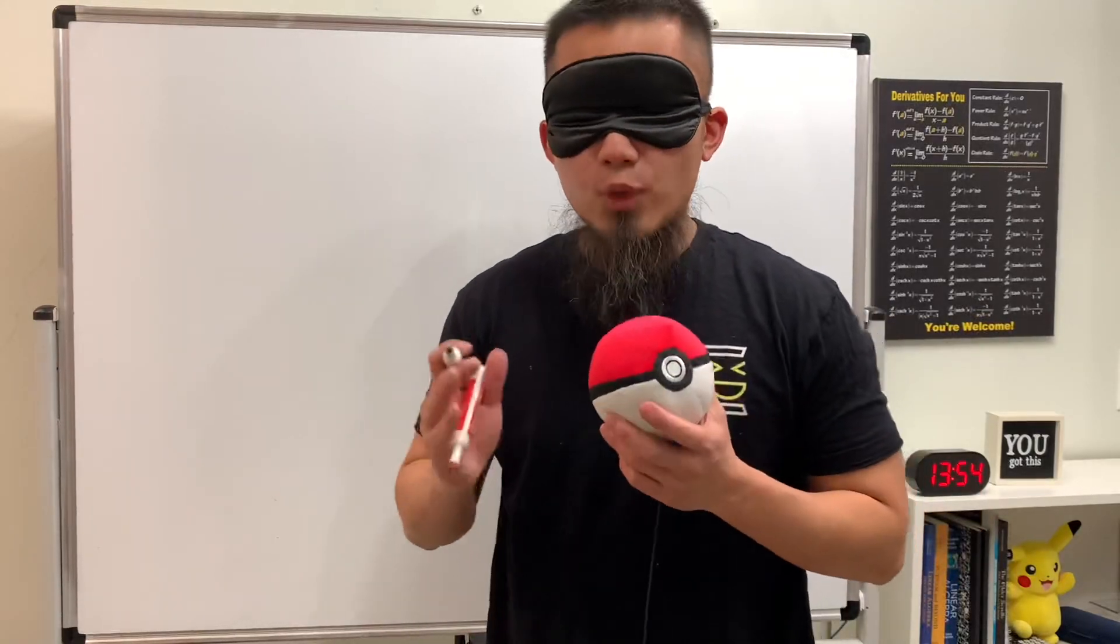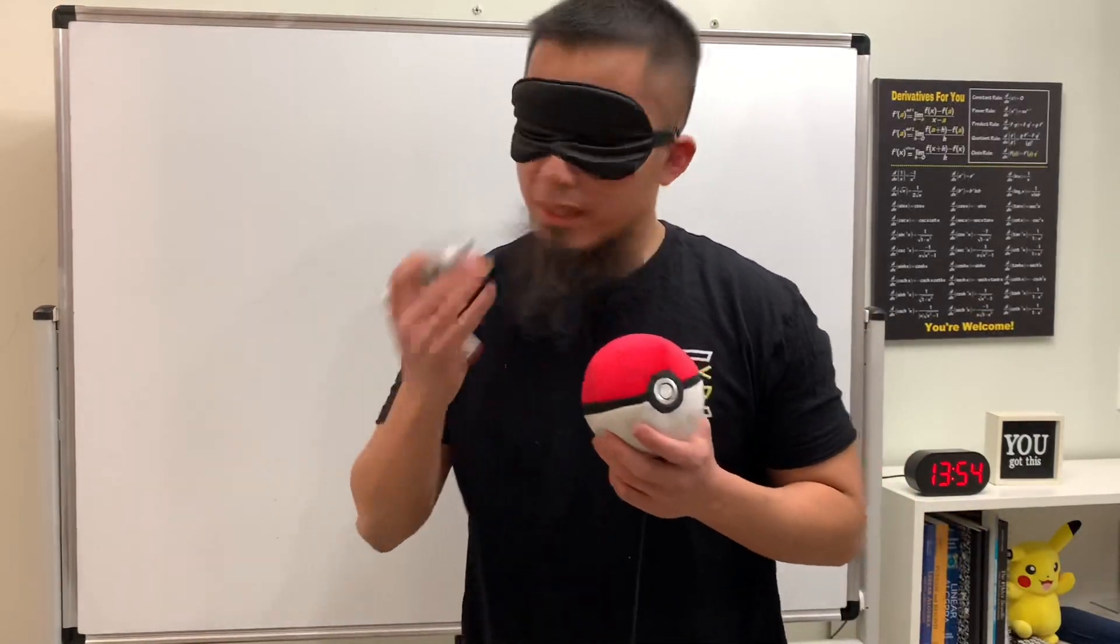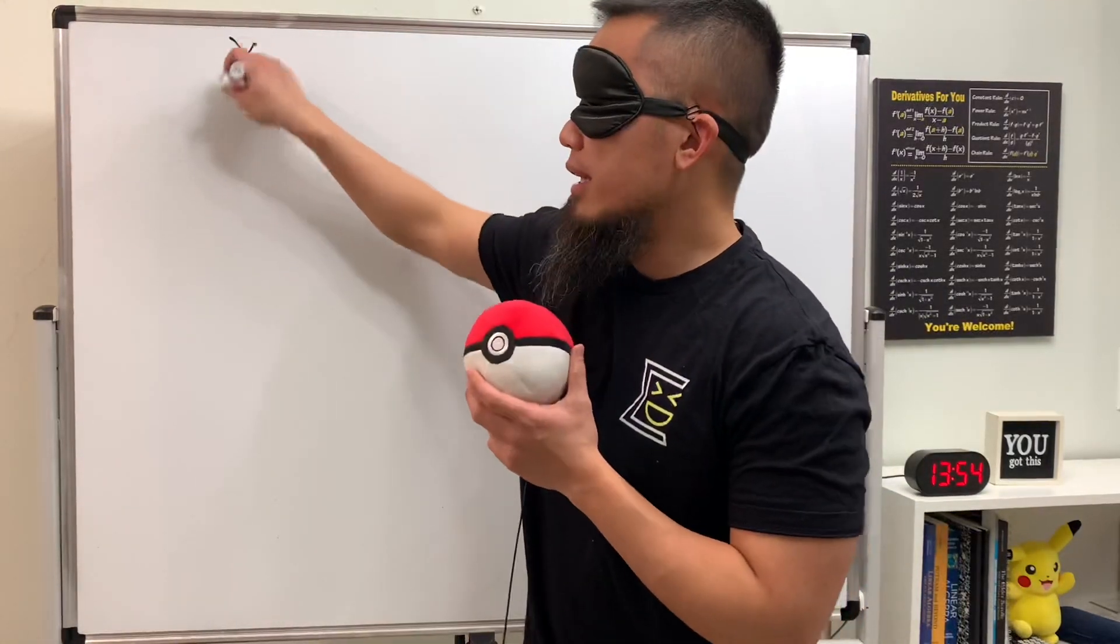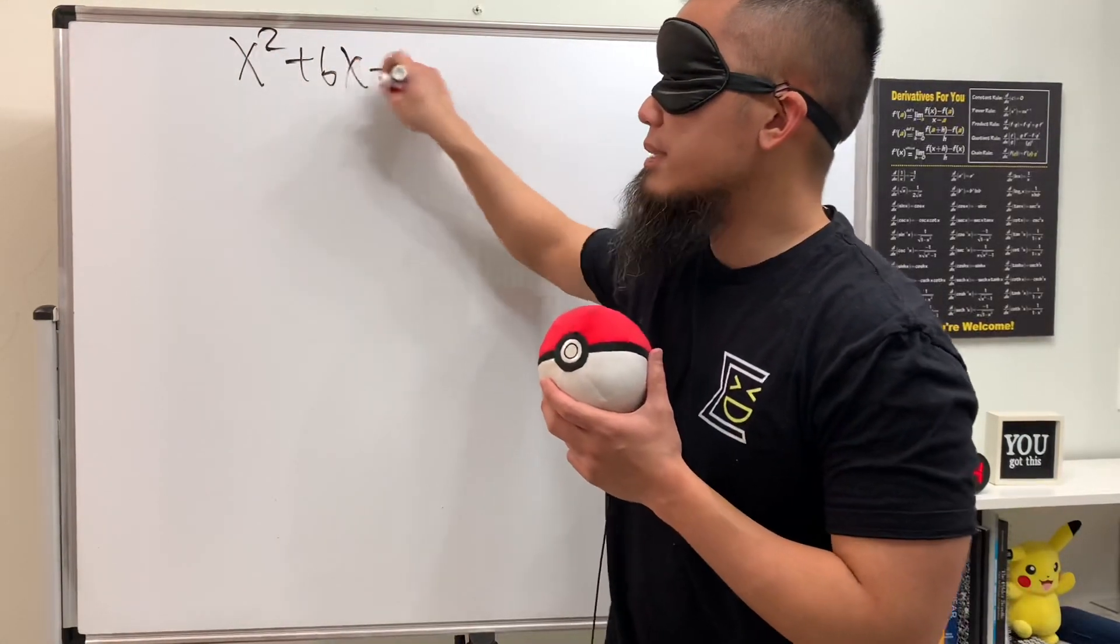Okay, in this video let's see if we can solve a quadratic equation blindly, literally. Here we go. If you want to solve this equation x² + 6x + 8 = 0...